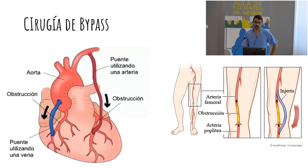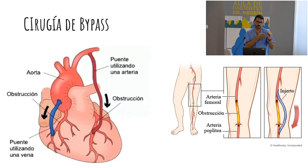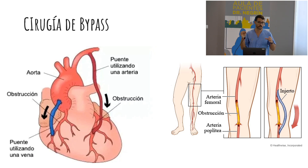Cuando eso no es posible, lo que se puede hacer es un puenteo, que en inglés es bypass. Como no llega la sangre a esa arteria porque está taponada y el stent no puede pasar, cogemos una vena o una arteria de otro lugar, puenteamos y nos saltamos ese atasco. Es como irte por las mesas en vez de coger la rotonda.